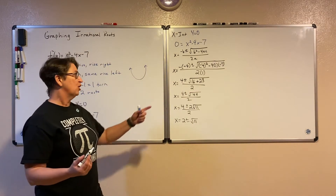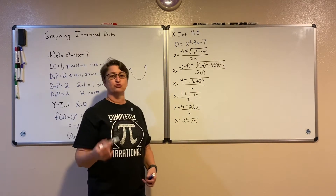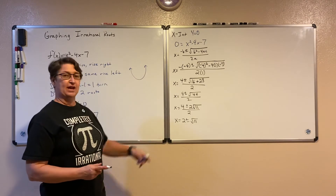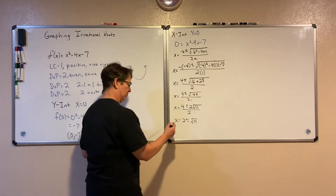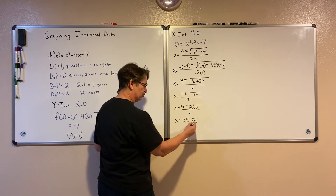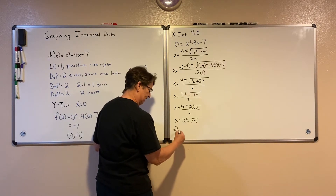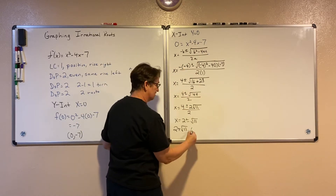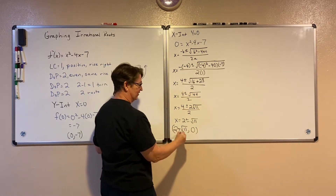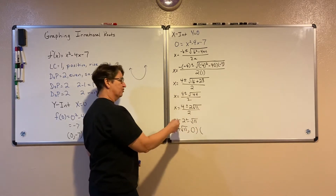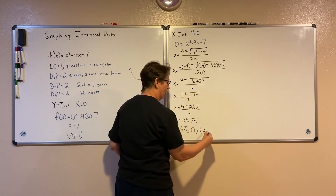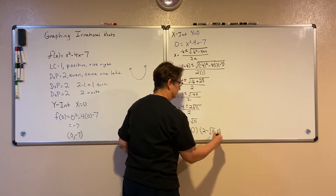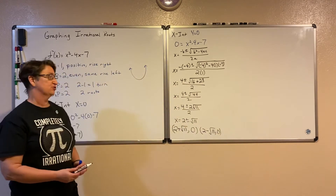I have a previous video where we've gone through this process a little slower, so if that was a little bit fast, look at the previous video on the quadratic formula where I worked through this problem. So my x-intercepts here — there are two different ones. The first is at (2 + √11, 0), and I also have one at (2 − √11, 0). So those are my x-intercepts for this graph.